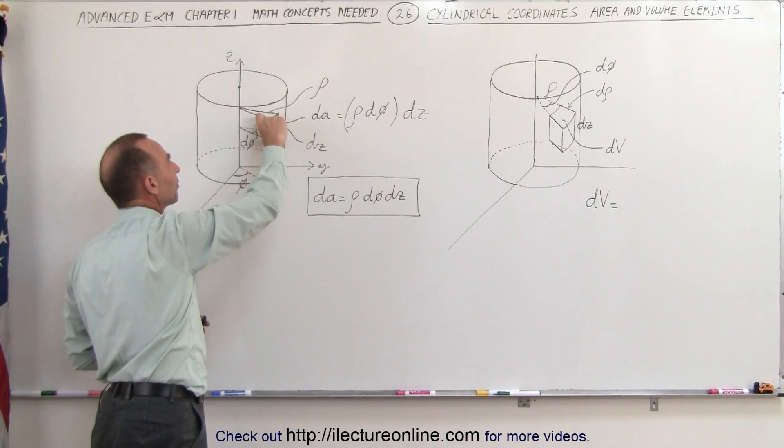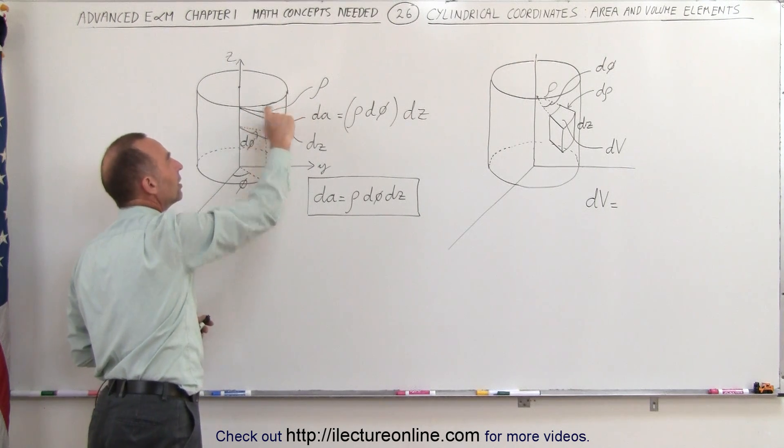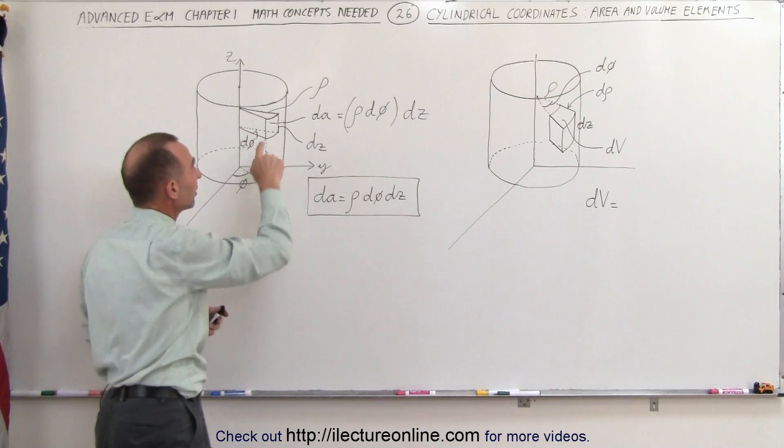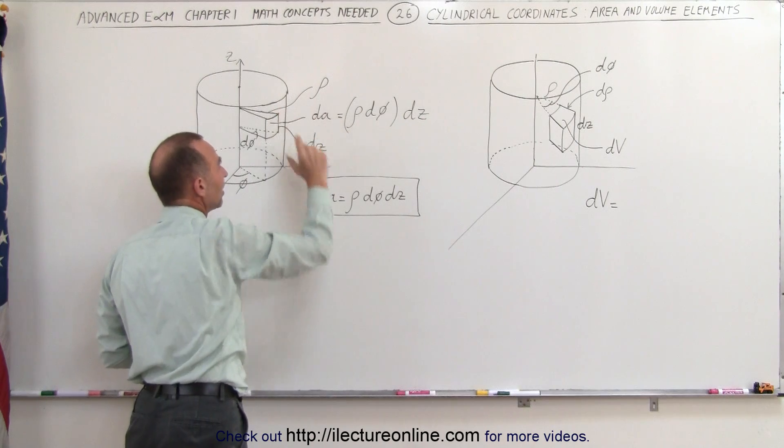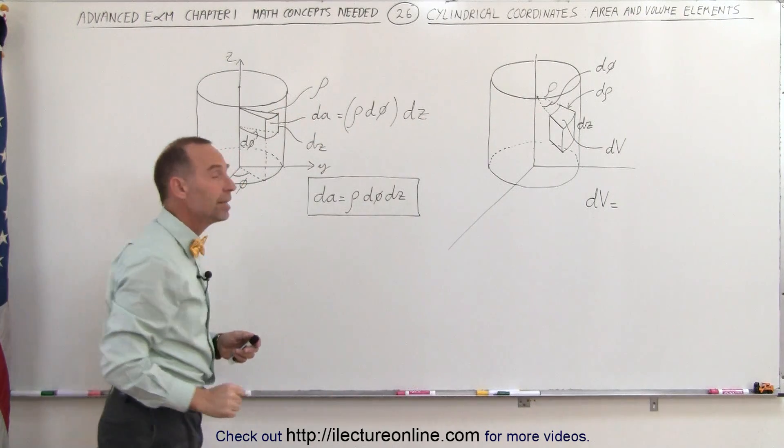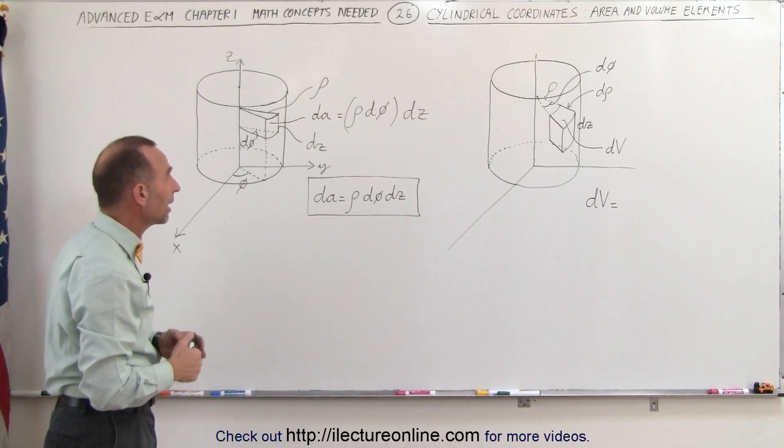and then we have to multiply times the height here, and we'll call that dz. In other words, the area element dA is simply rho dPhi multiplied times dz, and here's the equation. dA equals rho dPhi times dz.